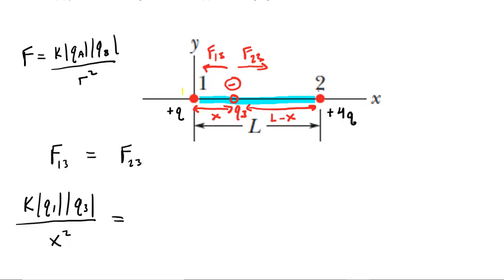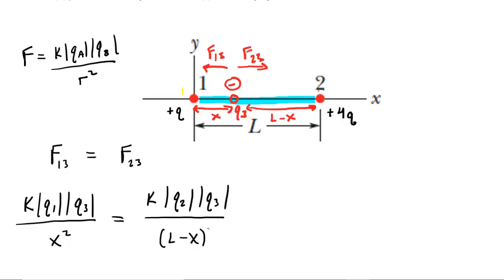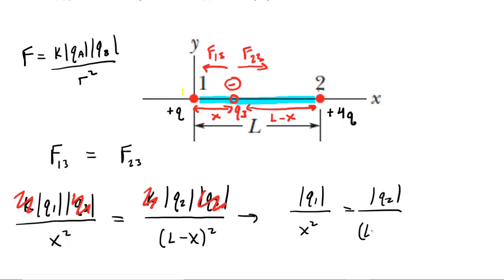Setting this equal to the force between charges two and three: K times |Q2| times |Q3| divided by the distance squared. From the diagram, the distance between charges two and three is L minus x, so we divide by (L minus x) squared. We can simplify by canceling the K's and Q3 on both sides, leaving: |Q1| over x squared equals |Q2| over (L minus x) squared.